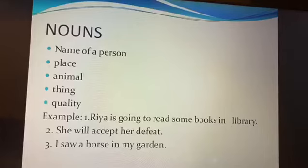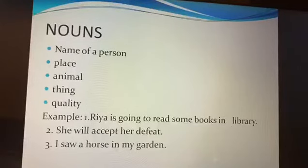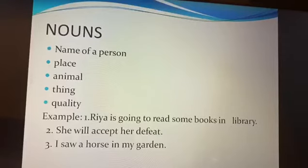Now let's see some examples. Rhea is going to read some books in the library. So here Rhea is the name of a person, books is a thing, and library is a place. She will accept her defeat — so here defeat is a quality. I saw a horse in my garden — here horse is an animal and garden is a place.